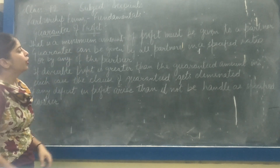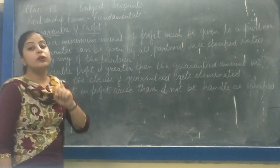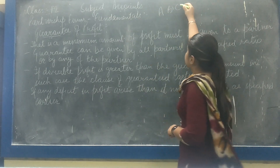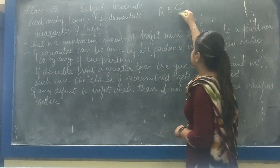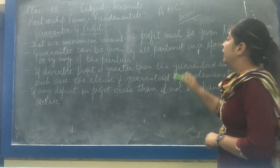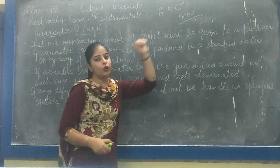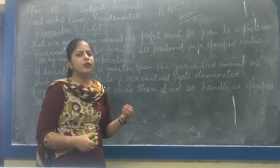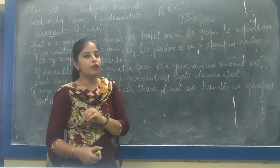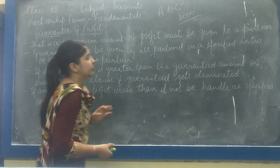Guarantee of Profit means the minimum amount of profit that must be given to a partner. Suppose there are three partners A, B and C. C has been given a guarantee of minimum profit of Rs. 10,000. This guarantee is given when, for example, earlier there were two partners A and B, and now they want to admit C for some managerial work. So they give a guarantee that C will receive a minimum profit of 10,000 as contribution in the firm.